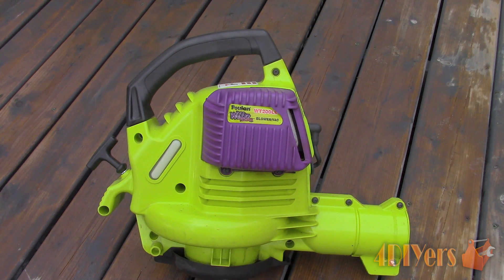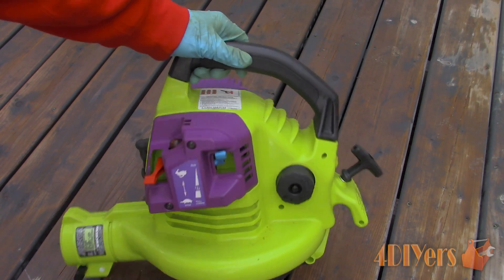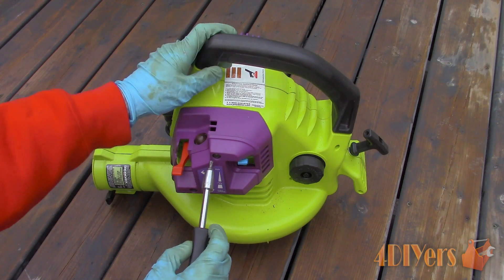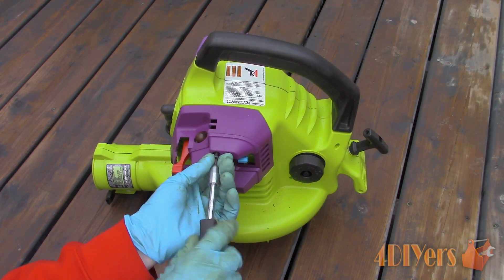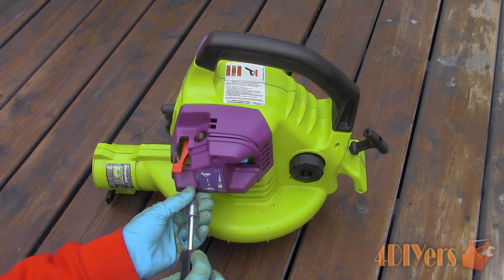This particular leaf blower I am working with here today is a Poulan Wild Thing model number WT200LE blower vacuum combo. Removal processes and styles will vary between accessing the carburetor and carburetor disassembly procedures. Over time the carburetor can become clogged either by a poor air filter or dirty fuel. This will cause various issues such as hard starting, poor running, decreased performance and poor fuel economy.